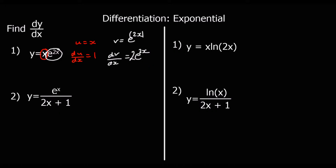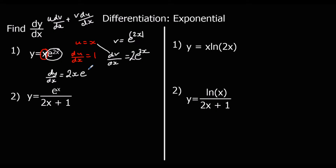Applying the product rule: u·dv/dx plus v·du/dx. So u·dv/dx is x times 2e^(2x), giving 2x·e^(2x). Plus v·du/dx, which is e^(2x) times 1. So dy/dx equals 2x·e^(2x) plus e^(2x). That is our differentiated function.